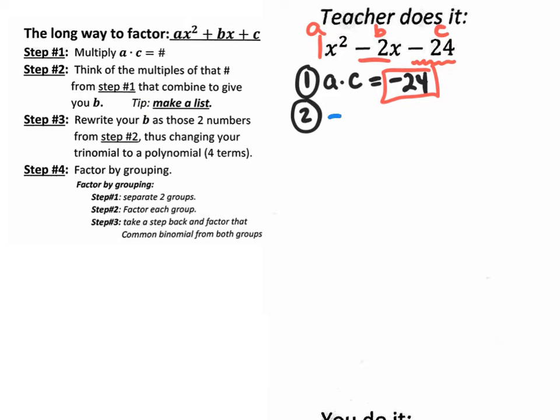So how could we get negative 24? Well, I could say negative 1 times 24, or negative 2 times 12, or negative 3 times 8, or negative 4 times 6. Those are the four possible options besides changing signs. Anyhow, which pair of numbers combines together to give us the b value, which is negative 2?